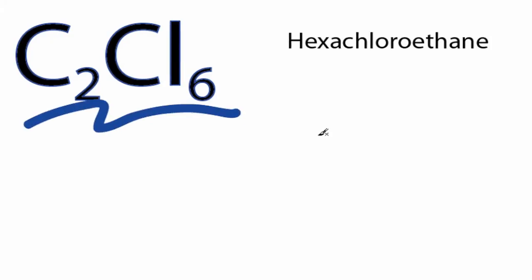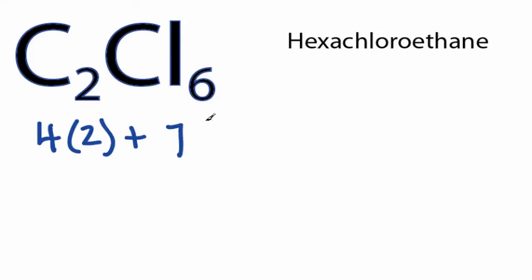For the C2Cl6 Lewis structure, carbon has four valence electrons. We have two carbons and we'll add to that seven valence electrons for chlorine, but we have six chlorines.